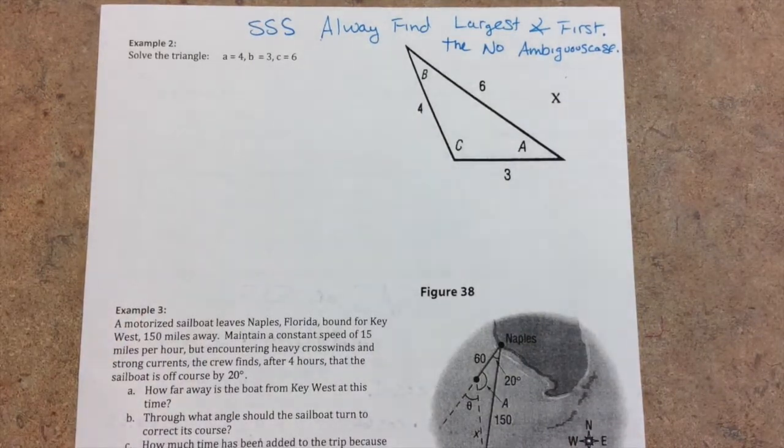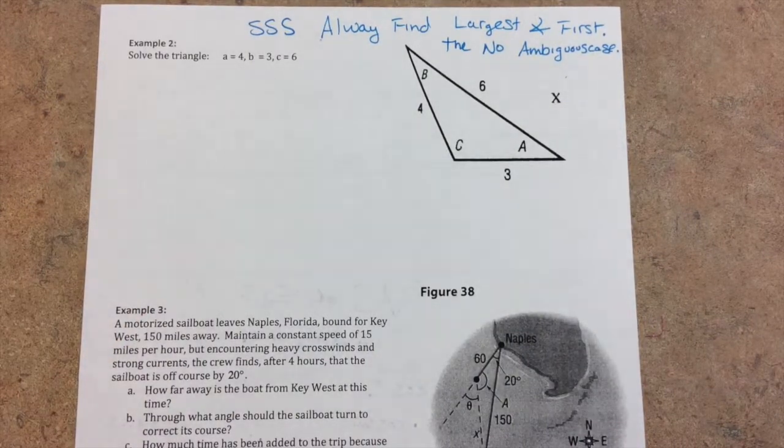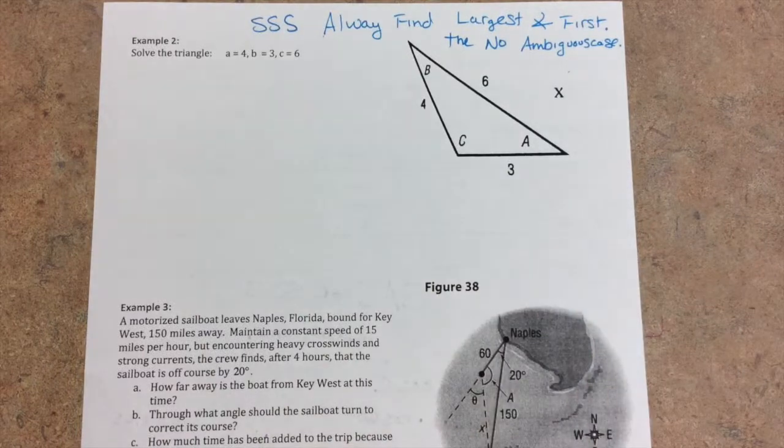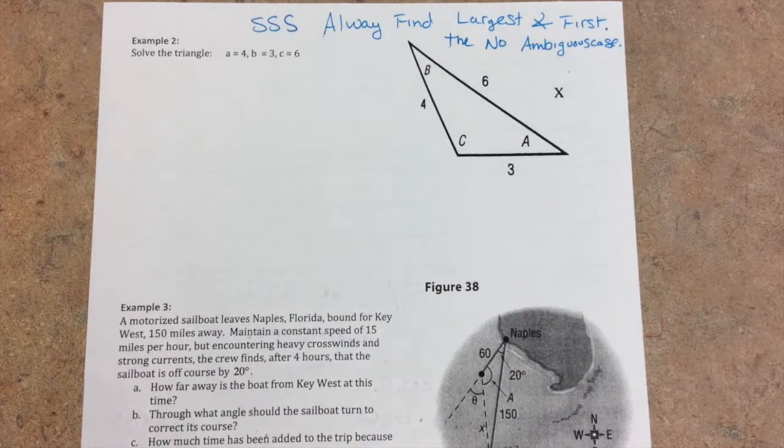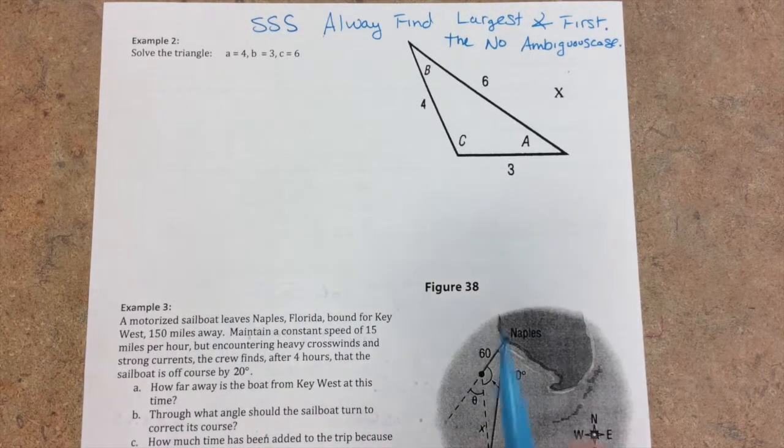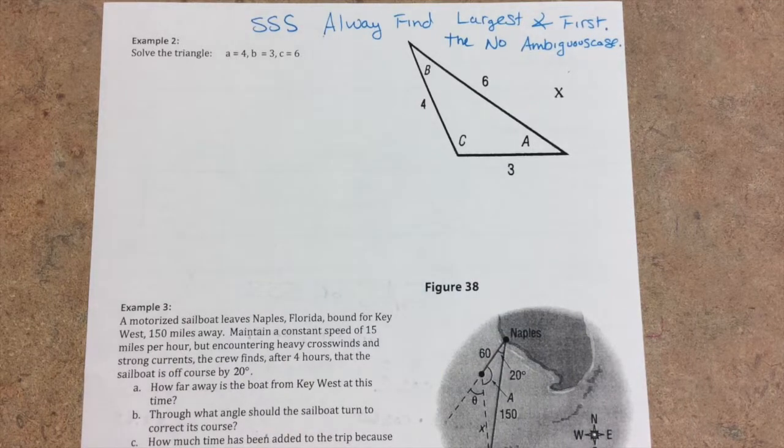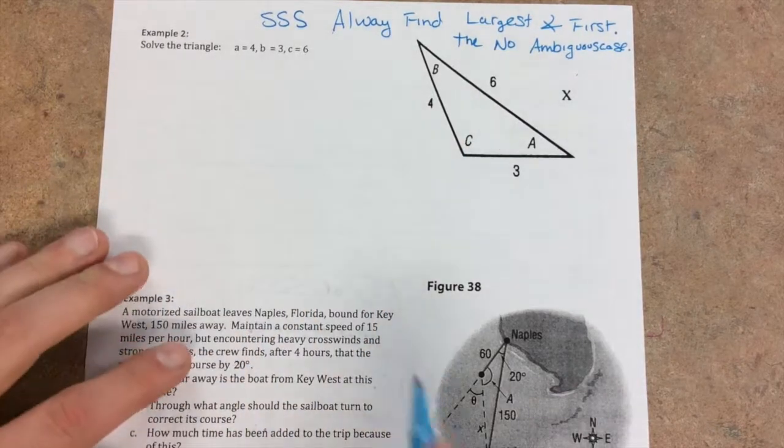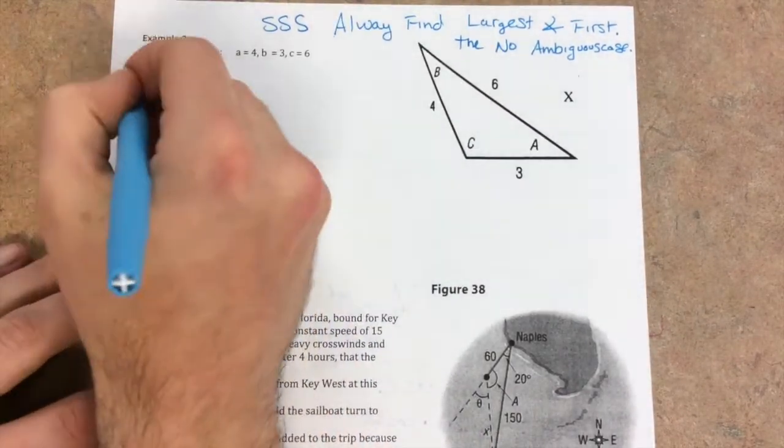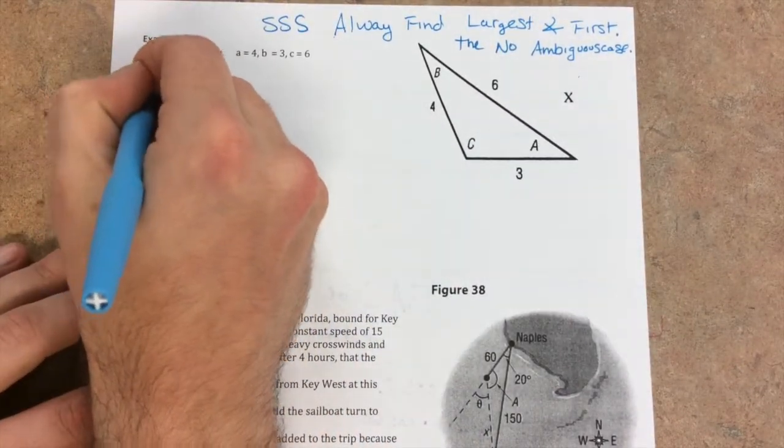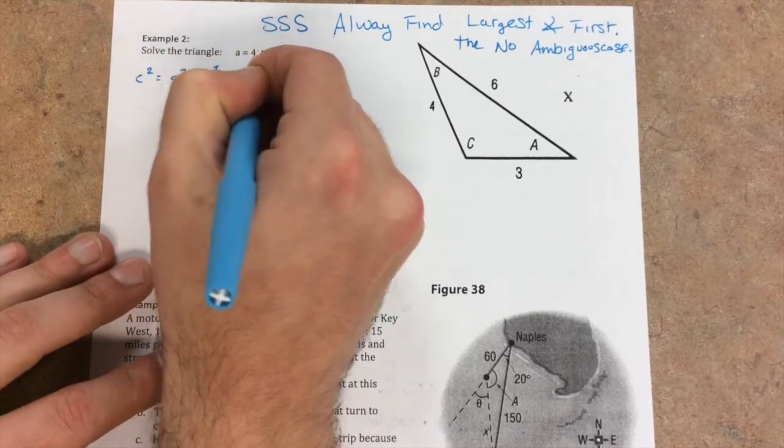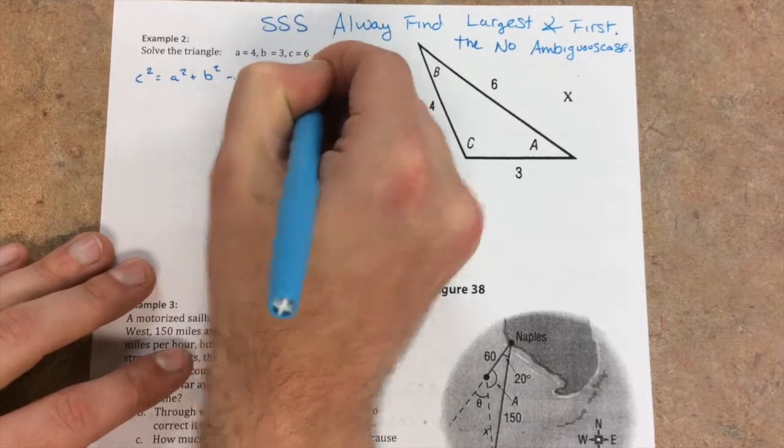That's the nice thing. You can choose whatever side you want to find, but after that, you might have to worry about if there's one solution or two solutions or no solutions. To save yourself any error, always start with the biggest side first. How do you know the biggest side? The biggest angle is always across from the largest side. We're going to write the formula. C squared equals a squared plus b squared minus 2ab cosine c.